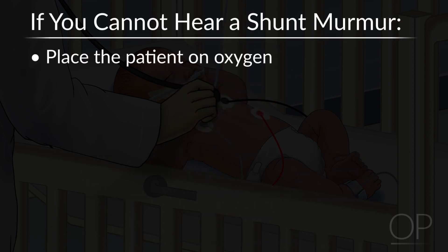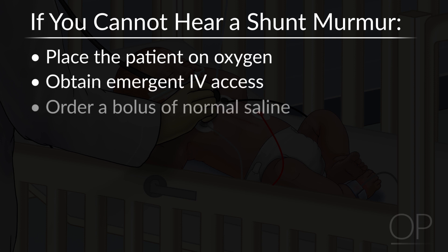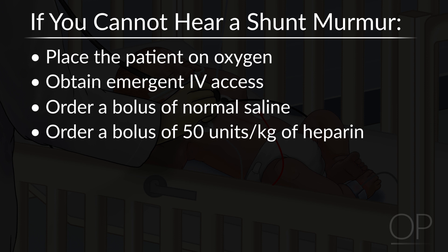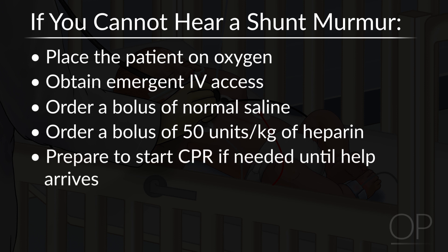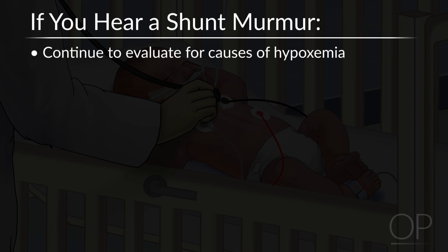Place oxygen on the patient, obtain emergent IV access, order a bolus of normal saline and a bolus of 50 units per kilo of heparin, and get ready to perform CPR if needed while help arrives. If you hear a shunt murmur, continue to evaluate for causes of hypoxemia. Remember, the patient may be progressing towards clotting their shunt, so continue to keep that in your differential.